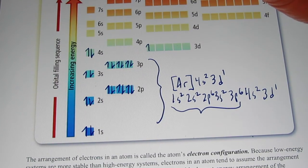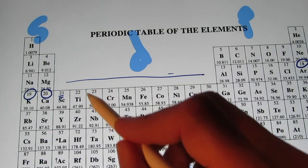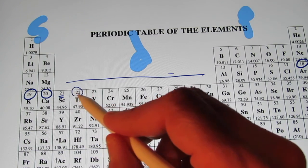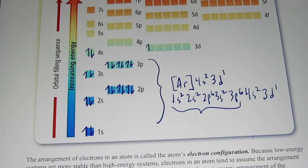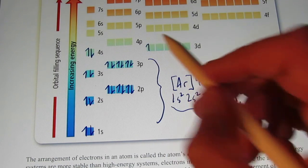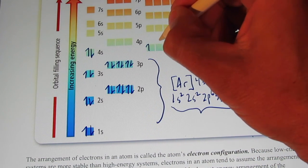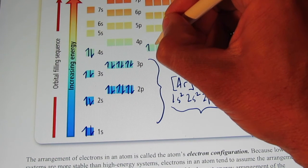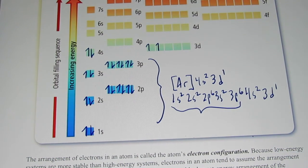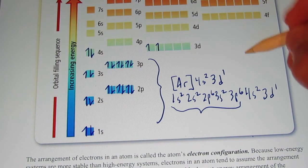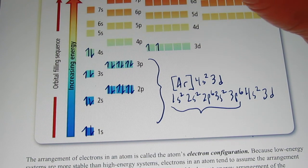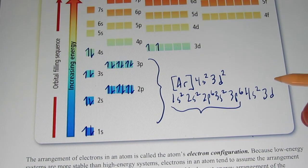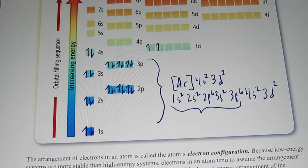The next element is titanium with 22 electrons. Where is that next electron going to go? It's not going to pair up — it will take one of the other available d orbitals and be by itself. So its configuration is going to end with 3d2, and you would be correct.